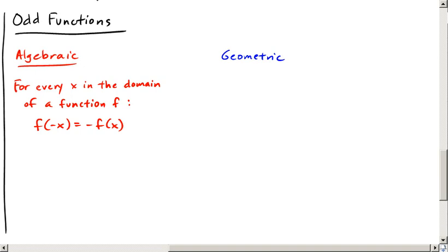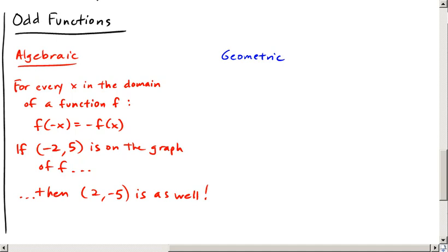If you have negative 2, 5 on the graph of some function f, then in an odd function, the point 2, negative 5 would be on there as well.